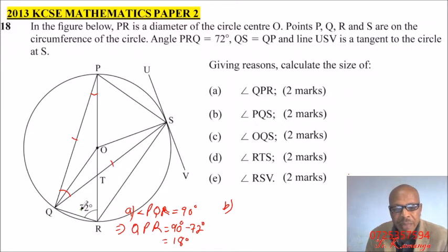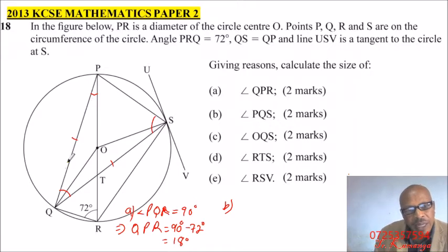Angle subtended by the same chord PQ. So we say, we have PQ. The PQ subtends this angle. And it also subtends this angle. Angle subtended by the same chord. So this is 72, the whole of this angle.